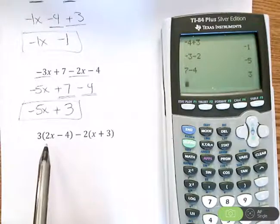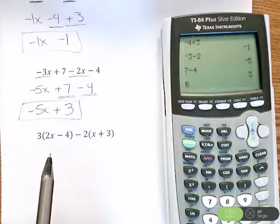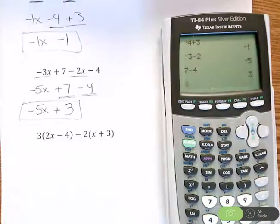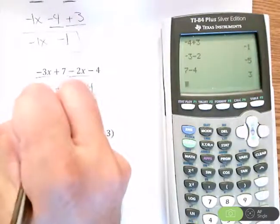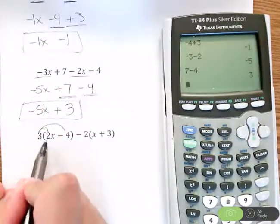And finally, our probably most complex example here as we get a little bit of parentheses going on. We have 3 times parentheses 2x minus 4, minus 2 times parentheses x plus 3. Now what we're going to do here is whenever I see parentheses, I like to distribute. What I mean by distribute is we are multiplying.